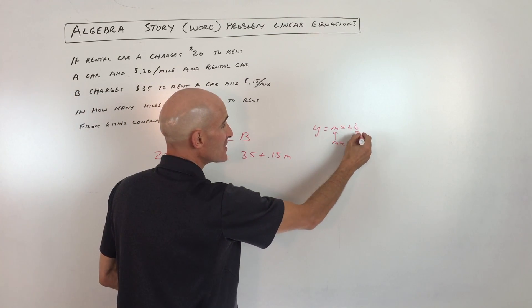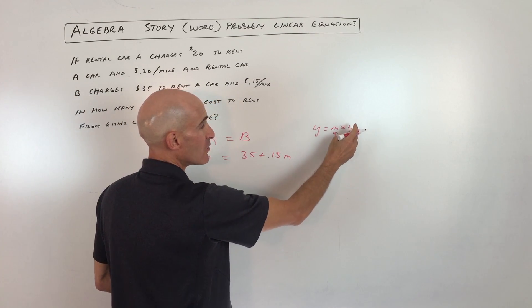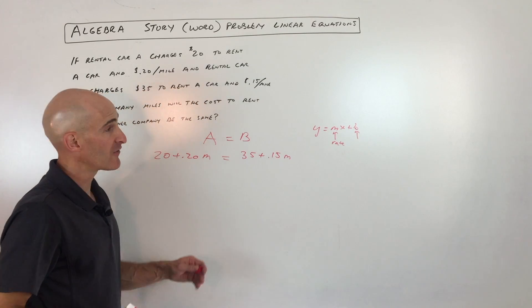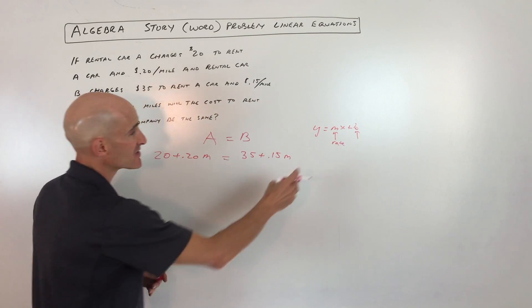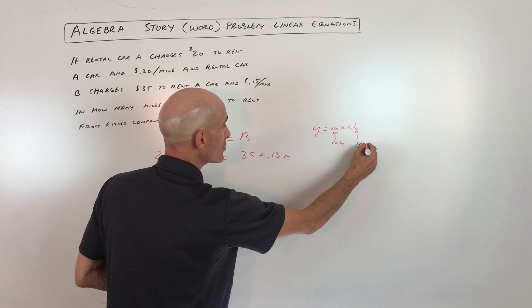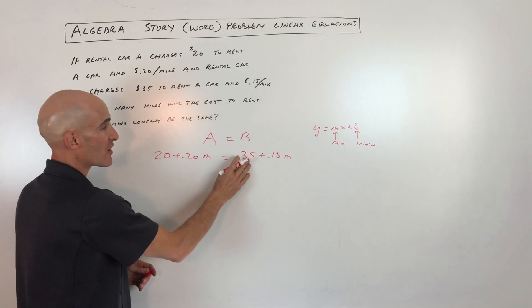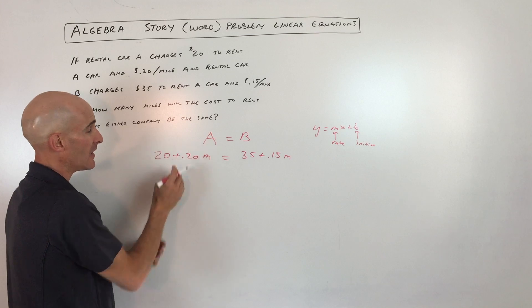And the b, that's the initial condition. That's the starting amount. So instead of the y-intercept, like you normally think of b when you're graphing lines, you think of b as the starting amount or the initial condition. In this case, you're starting off at $35 with company B, $20 with company A.